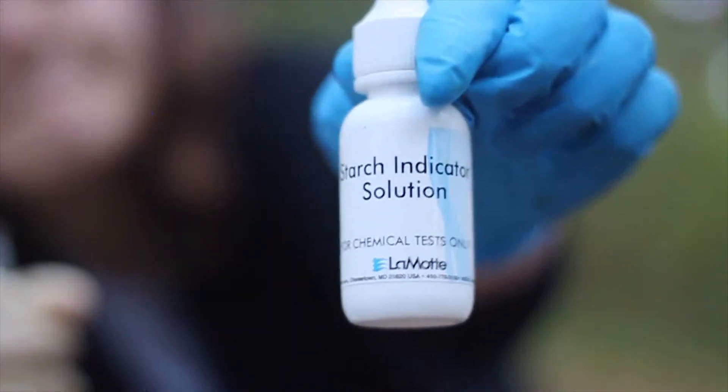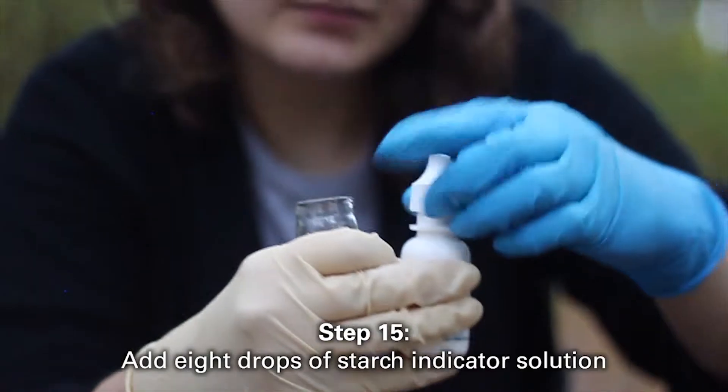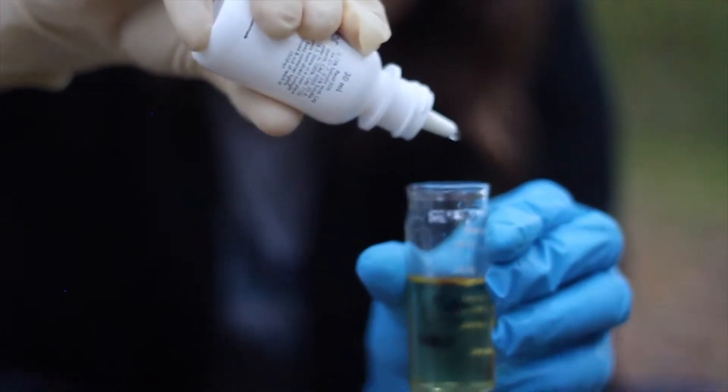Remove the cap of your vial. You will add 8 drops of starch indicator solution to the sample. This should turn your light yellow sample into a dark purple.